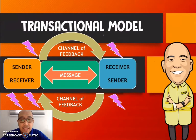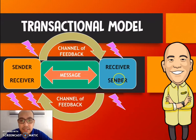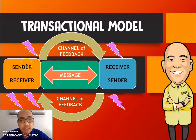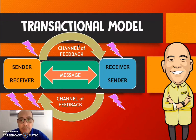In this diagram, the sender and the receiver — we have the message and the channel of feedback. So there is a wide interaction between the sender and the receiver. A lot of feedback and a lot of responses are happening in this type of communication.